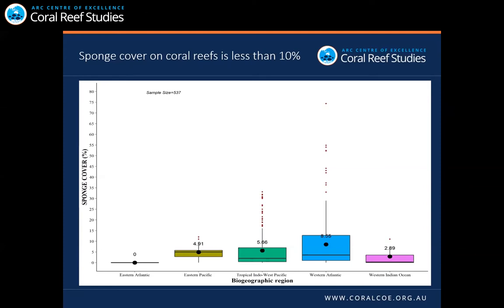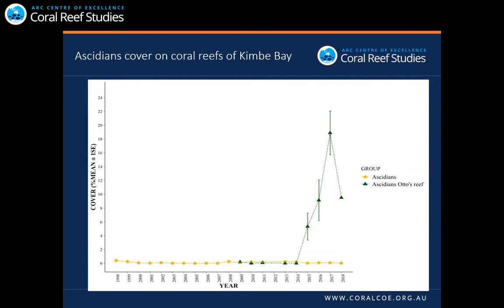This graph shows sponge cover by biogeographical region. Basically, sponge cover is less than 10% in most cases. However, there are important outliers — sometimes sponges can cover more than 20% and up to 75% of the substratum, indicating that in some cases these coral reef systems may no longer be coral reef systems but sponge-dominated environments. For ascidians, the information is dispersed and different metrics are used to measure abundance, making it difficult to present a comparable picture of ascidian cover in the tropics.